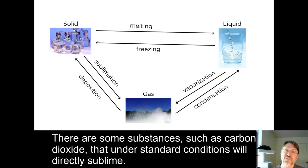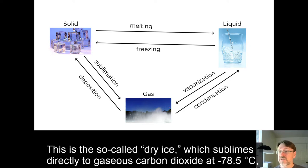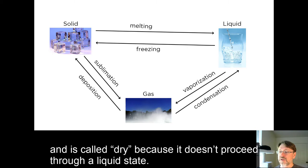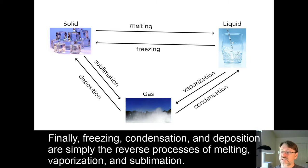There are some substances, such as carbon dioxide, that under standard conditions will directly sublime. This is so-called dry ice, which sublimes directly to gaseous carbon dioxide at -78.5°C, and is called dry because it doesn't proceed through a liquid state. Finally, freezing, condensation, and deposition are simply the reverse processes of melting, vaporization, and sublimation.